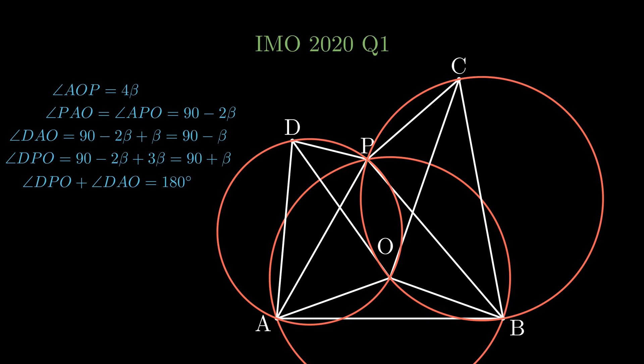Similarly, BCPO is also cyclic. Now we're almost done. Note that angle ADO is equal to angle APO, because of the cyclic quadrilateral, which is equal to angle PAO, because of the isosceles triangle, which is equal to angle PDO, by the cyclic quadrilateral again. Hence O lies on the angle bisector of angle ADP. Similarly, O lies on the angle bisector of angle BCP. By definition, O lies on the perpendicular bisector of AB. Hence we are done.